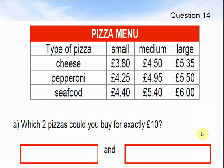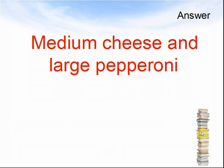Question 14. There are 3 types of pizzas: cheese, pepperoni and seafood. And they come in 3 sizes: small, medium and large. Which 2 pizzas could you buy for exactly £10? Pause the video to work out the answer. The answer was medium cheese and large pepperoni.